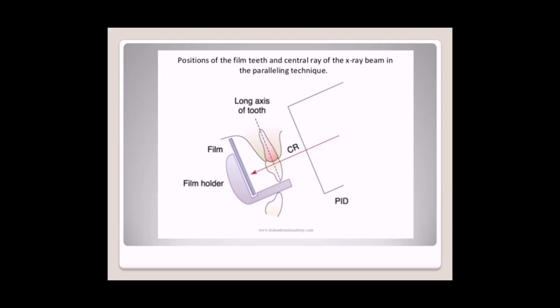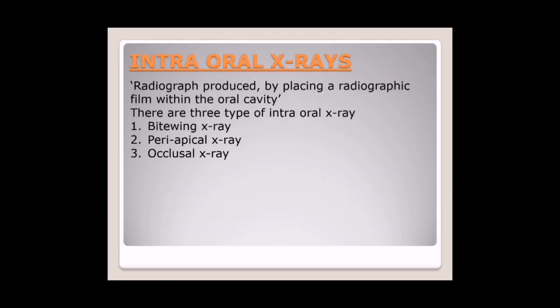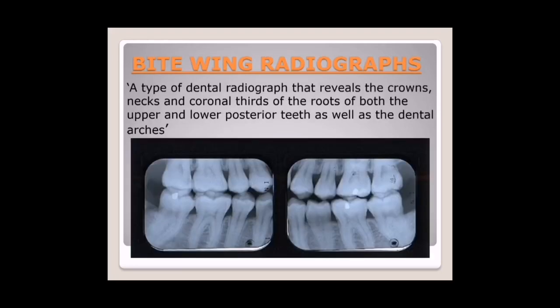A picture showing the position of a film, teeth, and central ray of the X-ray beam in a parallel technique. Types of dental X-rays are divided into two main categories: number one, intraoral, and number two, extraoral. Intraoral X-rays are radiographs produced by placing a radiographic film within the oral cavity. There are three types of intraoral X-rays: number one, bitewing X-rays; number two, periapical X-rays; number three, occlusal X-rays.